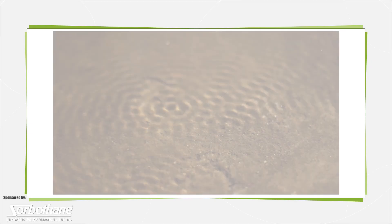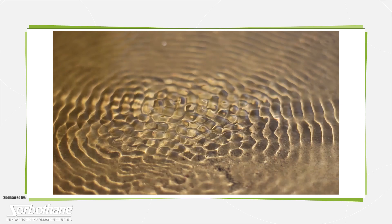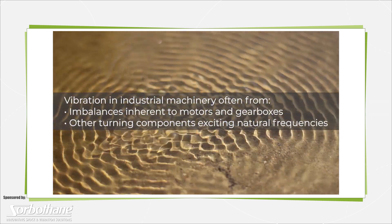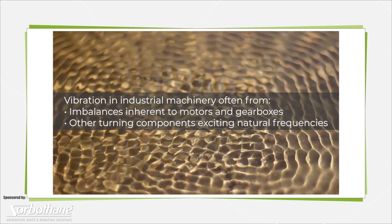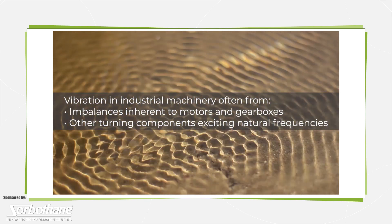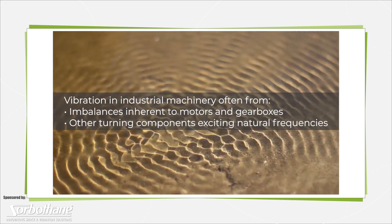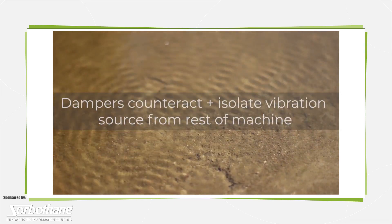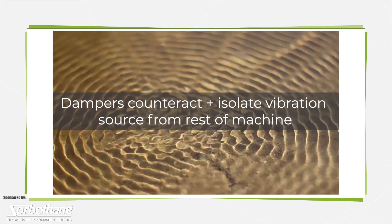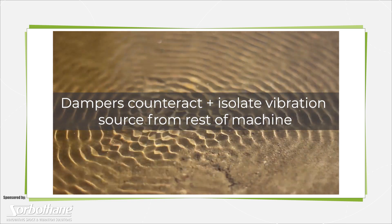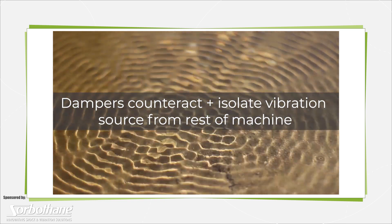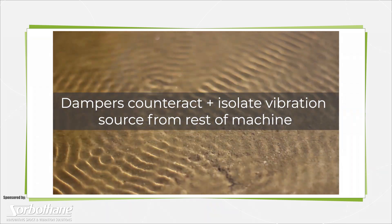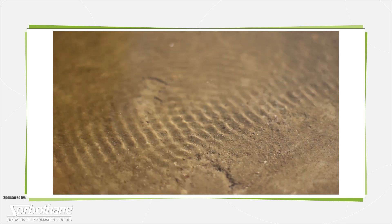Vibration in industrial machinery often originates from imbalances inherent to motors, gearboxes, and other turning components that excite natural frequencies. Dampers in this context are components that counteract and often isolate the vibration source from the rest of the machine to prevent the propagation of mechanical oscillation.